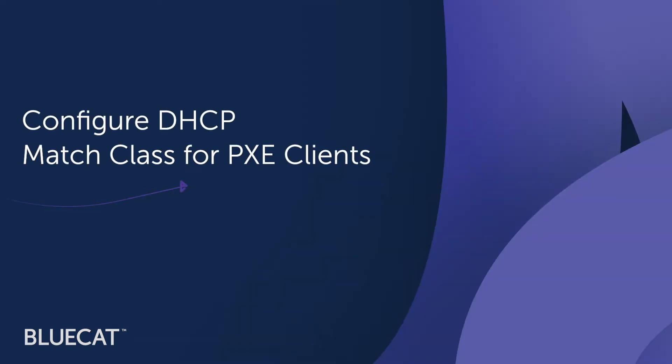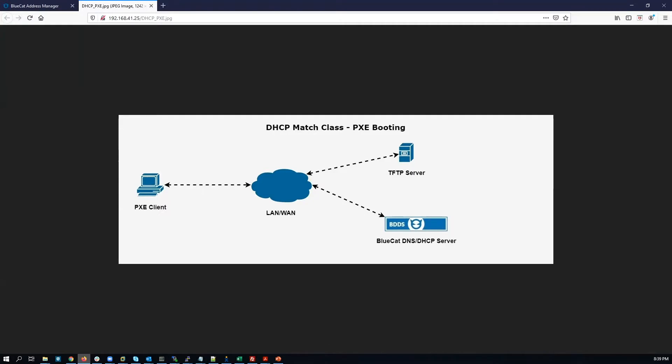Address Manager makes the process of leveraging your TFTP servers for use with your Pixie clients as straightforward as possible. In this video we are going to configure a DHCP match class for Pixie clients using BlueCat devices. Once you have your TFTP server set up, you need to do the following in Address Manager to configure your DHCP settings and get clients pointed to the right servers and files.